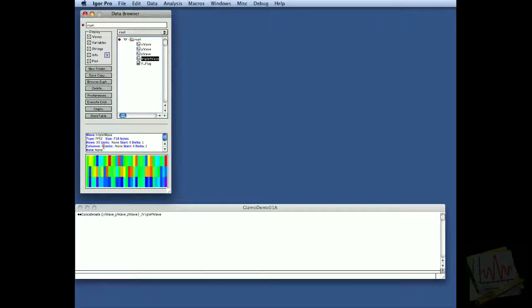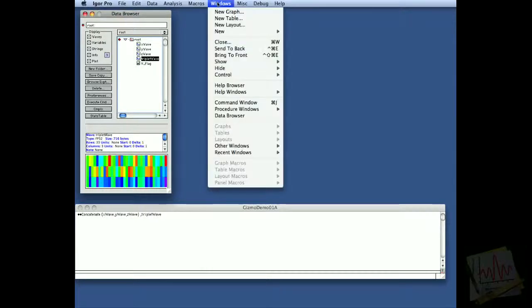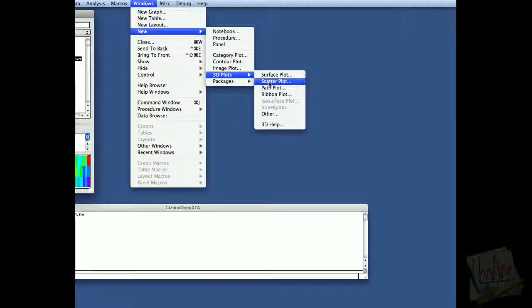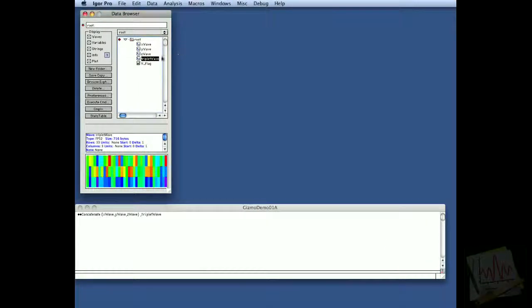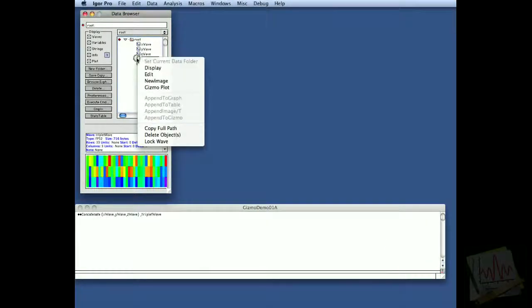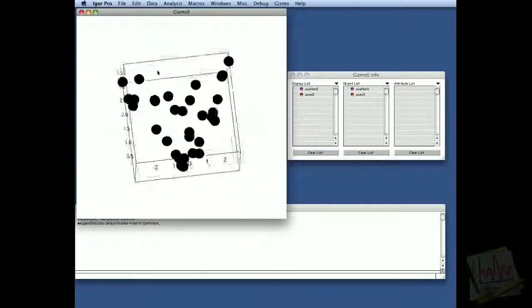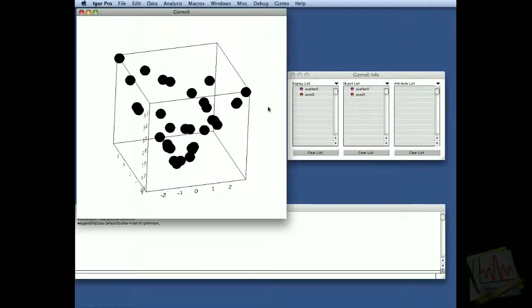So that's our 2-D wave. To create a scatter plot from this data, you can go to Windows menu, New, 3-D plot, and choose Scatter. But I'll show you an easier way. Right here in the Data Browser, you can right-click on the icon and choose Gizmo Plot. Boom, you got your scatter plot with a sphere for every data point.